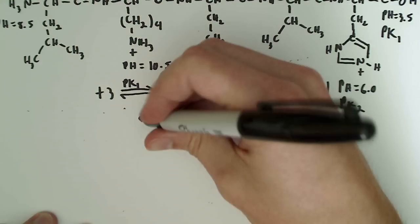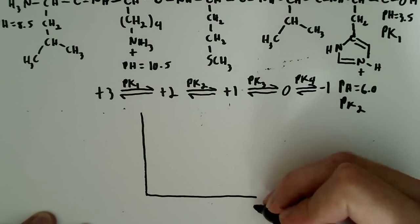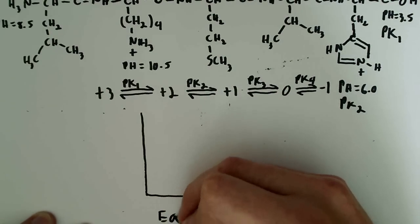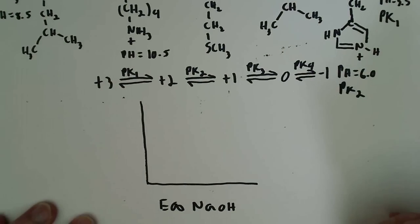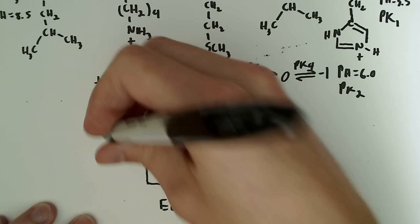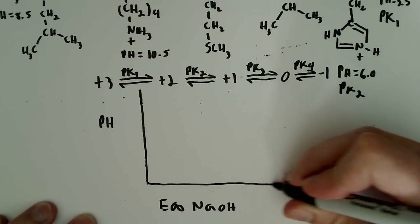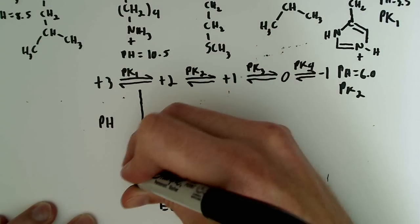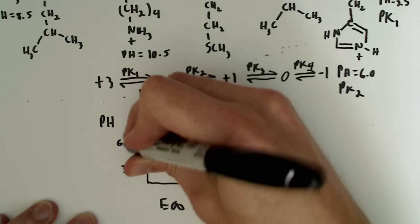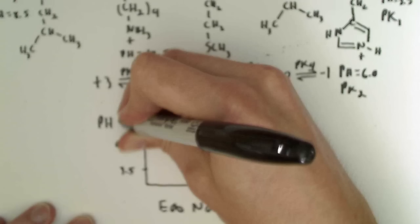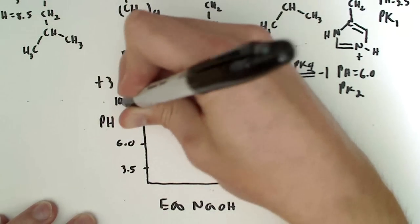So I'll begin drawing the titration curve, just remember your axis labels. So this down here is equivalence of NaOH, and this one over here is the pH, and on this chart I'm going to say 3.5, then I'm going to go up to 6, and go up to 8.5, and finish off somewhere up here around 10.5.